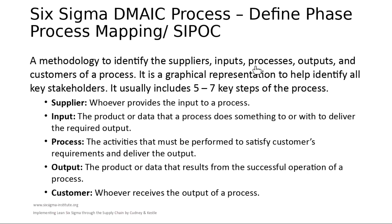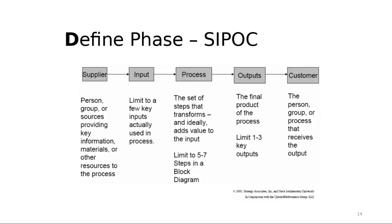The input — for example in the homework process — is the homework itself, and the process is the homework assignment. The output is the solved homework. The customer of the process can be internal or external, and the supplier is whoever provides the input to a process. The input is the product or data that a process does something with to deliver the required output. You must distinguish between input and output and between supplier and customer — the customer receives and the supplier provides.